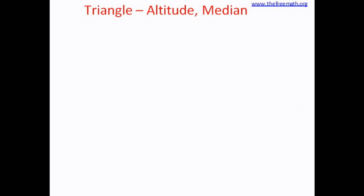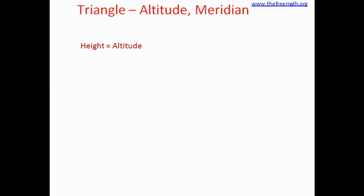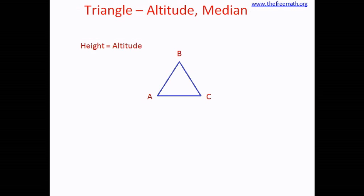Let's learn what are altitudes and medians of a triangle. An easy word for altitude is height, so an altitude is really the height of the triangle. Consider this triangle ABC — think of it as a triangle of cardboard paper and you are holding it upright. You want to measure the height, starting from point B. Any corner of the triangle is called a vertex, so you start measuring from vertex B to the side AC, which is also called the base.